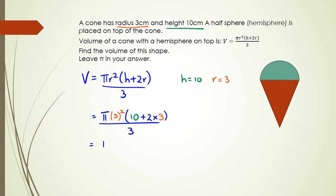If we have a look at it, this becomes π × 9 × (10 + 6) / 3. It actually says leave π in your answer, so you just got to work out 9 times 16 divided by 3.